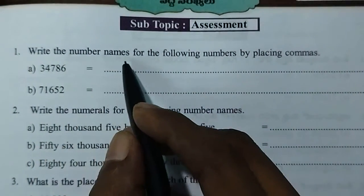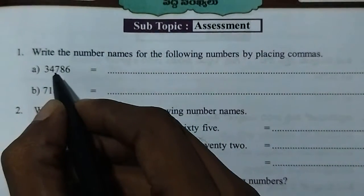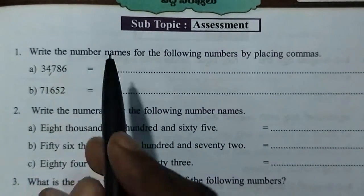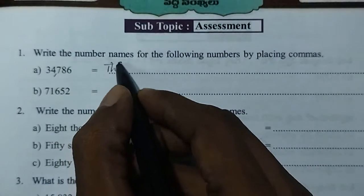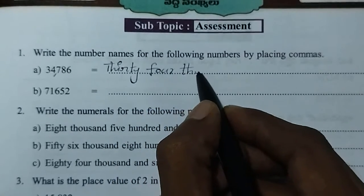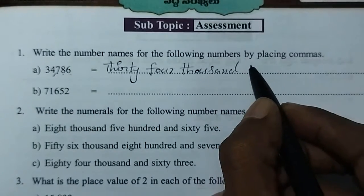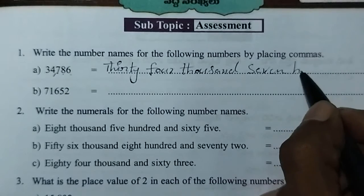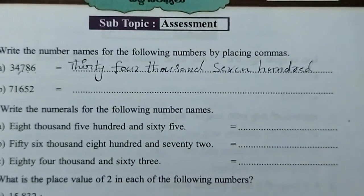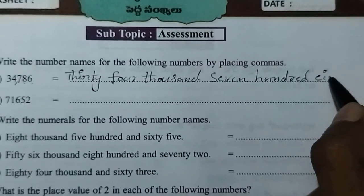I am going to write the number names for the following numbers by placing commas. I am going to write 34786.